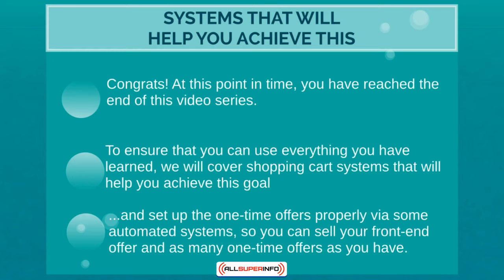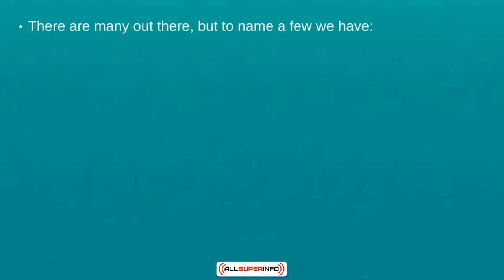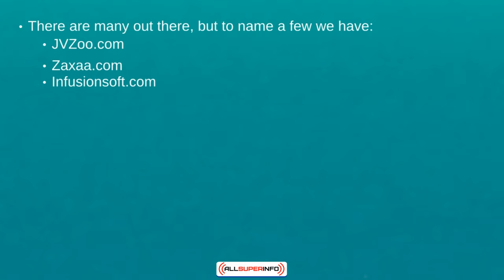There are many shopping cart systems out there, but here are just a few: JVZoo.com, Zaxaa.com, and Infusionsoft.com. Infusionsoft is a lot more complex, so Zaxaa.com is typically a good shopping cart system, as is JVZoo.com.